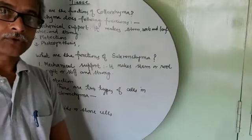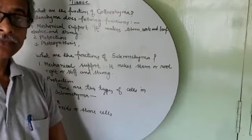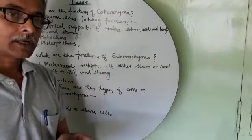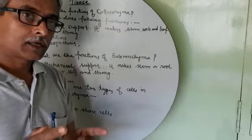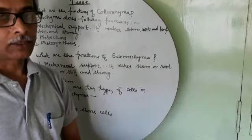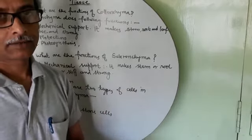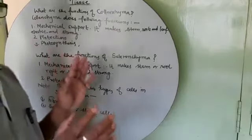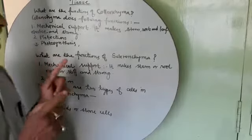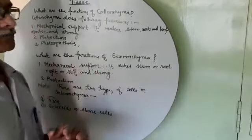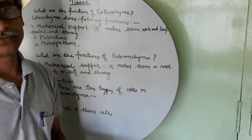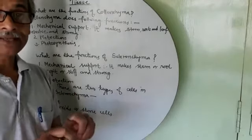Do you know what are the functions of Collenchyma? As you know that the Collenchyma are coated with cellulose and pectin. These are strong, so these give mechanical support to the stem and root or leaves of the plant. These are elastic,